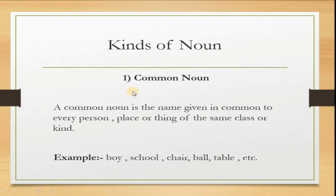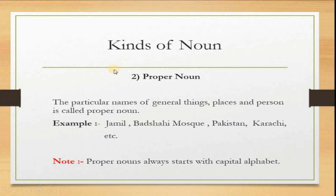Now we will learn about the kinds of noun. Number one: Common noun, ya ism aam. A common noun is the name given in common to every person, place or thing of the same class or kind. For example: boy, school, chair, ball, table. Ye aam nalai aahein jay ki asin muktalip shayun, maanin yaan jagayun lai istay maal kanda aahein.